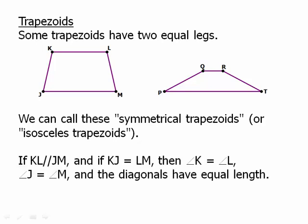Some trapezoids have two equal legs — we call these symmetrical trapezoids, or more formally, isosceles trapezoids. If the two sides KJ and LM are parallel, and the legs are equal, then the angles on the opposite sides have to be equal — the shape becomes entirely symmetrical. So angle K equals angle L, angle J equals angle M, and also the diagonals have equal length.